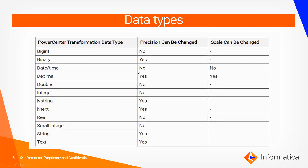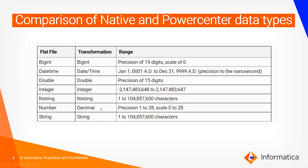The data types present in PowerCenter are: binary data, decimal, double, integer, nstring, ntext, real, small integer, string, and text. For some types, precision and scale can be changed - for example, binary, decimal, nstring, string, and text allow changes. For begin (bigint), you cannot change the precision. I will show this practically.